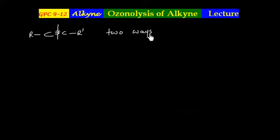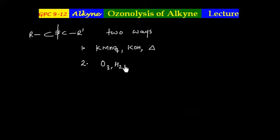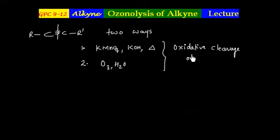In this lecture, we will discuss about ozonolysis of alkyne. Basically, the triple bond in alkyne can be cleaved by two ways. One is to use KMnO4 in basic medium, that is KOH, and the solution requires heating. The second way is to use ozonolysis. These two ways are called oxidative cleavage of alkyne — oxidative because the final product is oxidized, i.e., an acid.